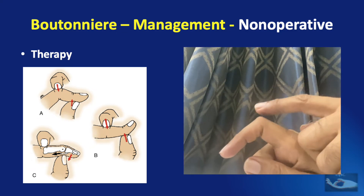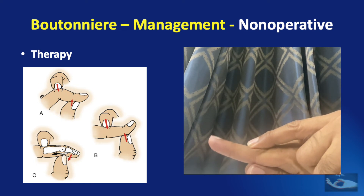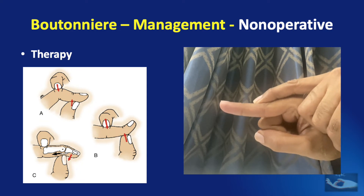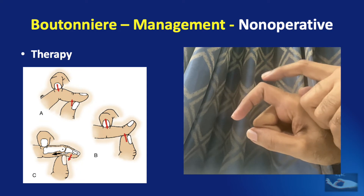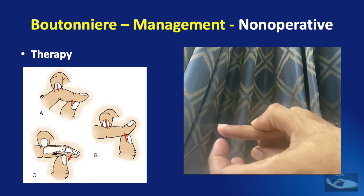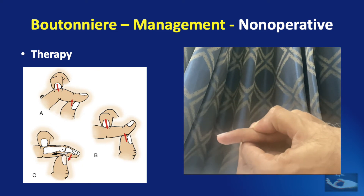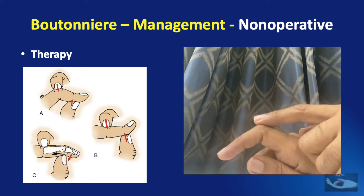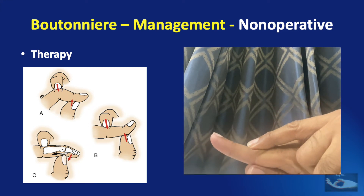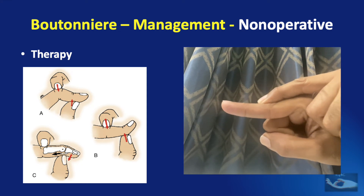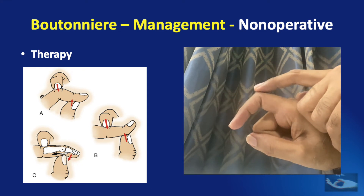The therapist places their index finger over the extensor aspect of the proximal interphalangeal joint and tries to bring it to neutral position as far as possible. At the same time, the therapist supports the flexor aspect of the terminal phalangeal region and keeps the DIP joint in extension. When the PIP joint comes to neutral position, there is hyperextension at the DIP joint in the Boutonniere deformity, and the patient must now actively flex the distal interphalangeal joint.